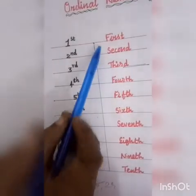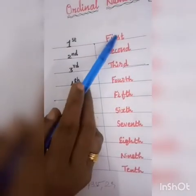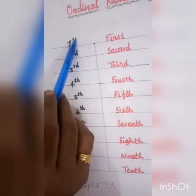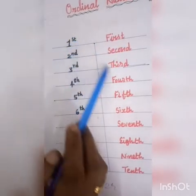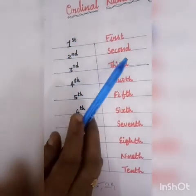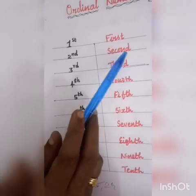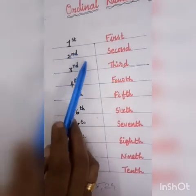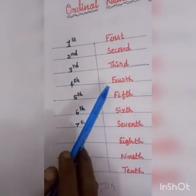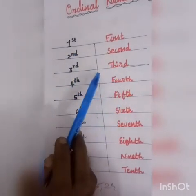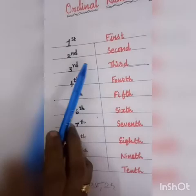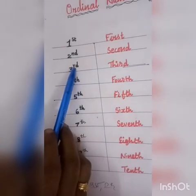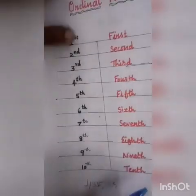For 1st, the last letter suffix is 'st'. So 1 takes 'st'. For 2nd, the last two letters suffix is 'nd'. So 2 takes 'nd'. For the rest, the last two letters suffix is 'th'. So 1 to 10 follow these rules.